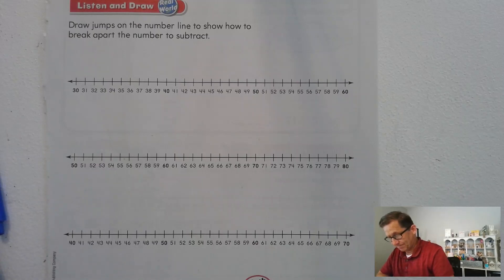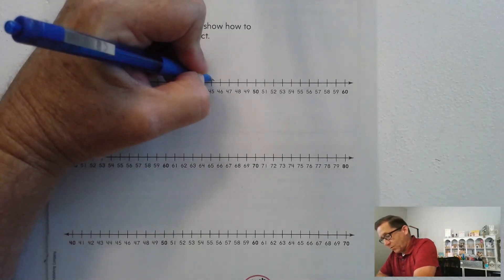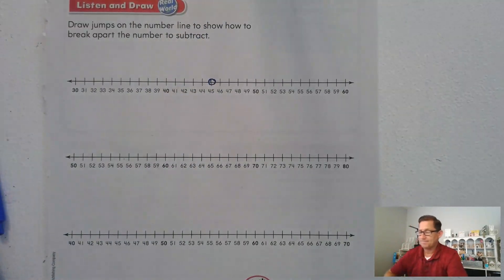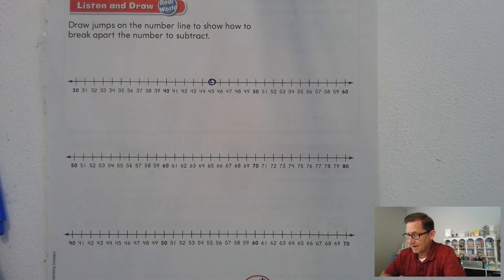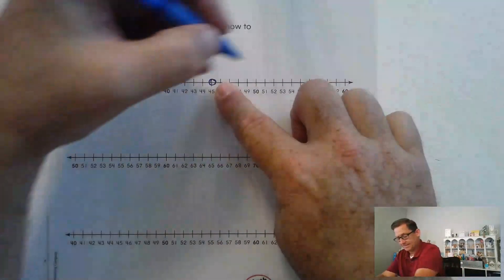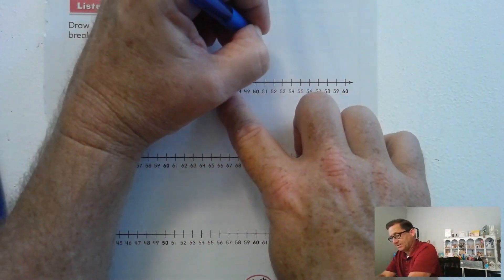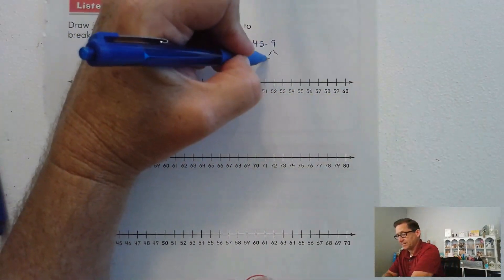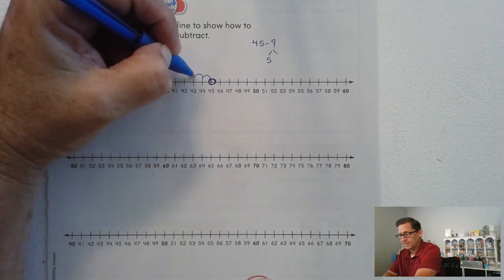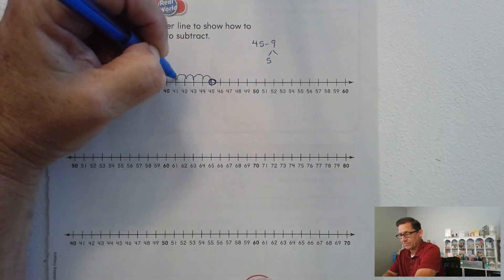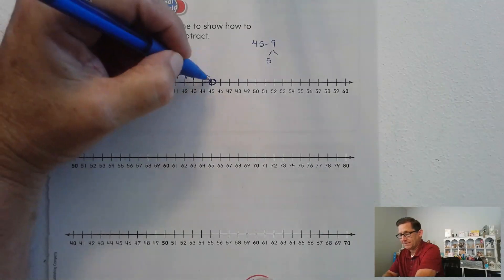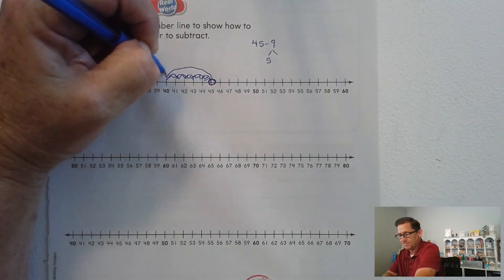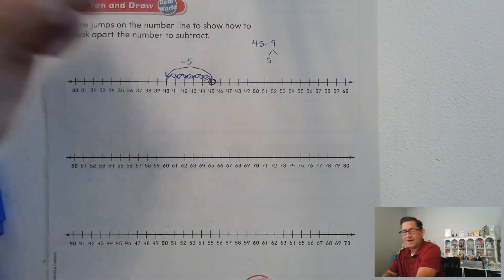Is this what you came up with? So we were at 45. Now I can make a 10 from 9. This was the first problem: 45 minus 9. Well, if I subtract 5, 1, 2, 3, 4, 5. Let me just do that in one jump. Minus 5. I'm at 40.